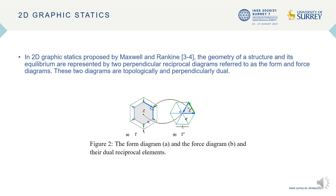The methodology uses two-dimensional graphic statics proposed by Maxwell and Rankin. In 2DGS, the geometry of a structure and its equilibrium are presented by two perpendicular reciprocal diagrams, referred to as form and force diagrams. These diagrams are topologically dual, meaning that vertices of one diagram correspond to faces of the other, and edges of one diagram correspond to edges of the other. Moreover, the edges of one diagram are perpendicular to the corresponding edges of the other. Figure 2 shows an example of a form diagram with its force diagram.